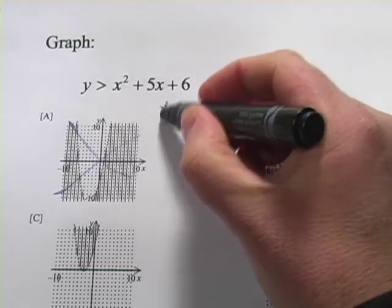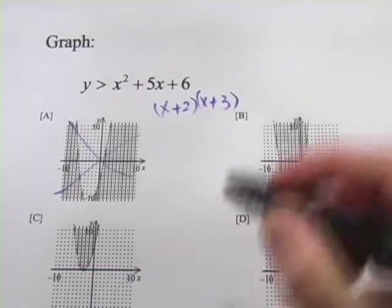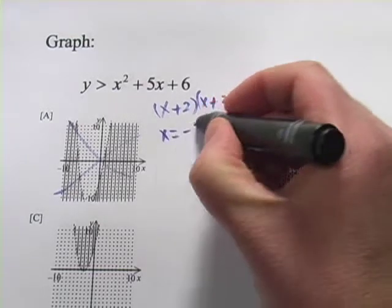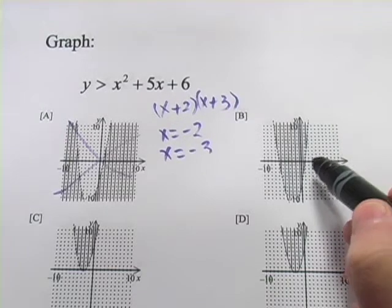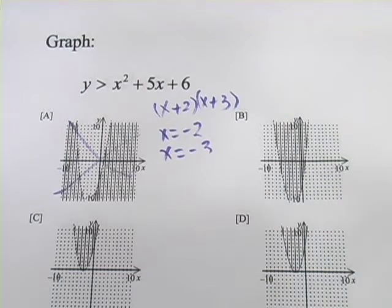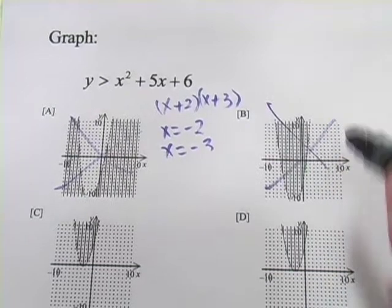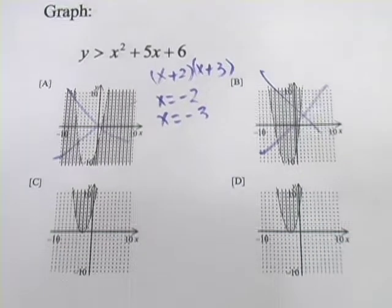I think we can factor this. That would be x plus 2 and x plus 3. We solve for x, we get x equals negative 2 and x equals negative 3. That's going to leave b out because b has solutions of 1 and negative 6 or something. It looks like both c and d have x-intercepts of negative 2 and negative 3. So which one of these is it?